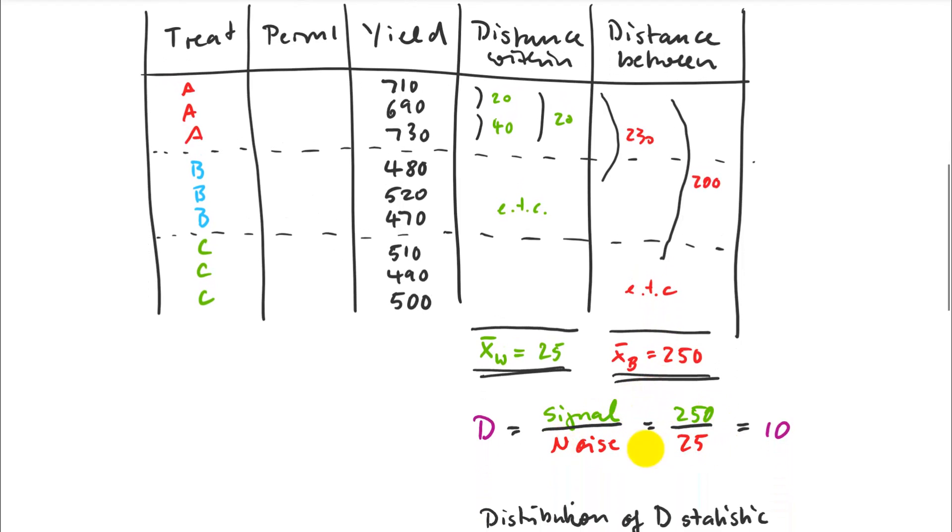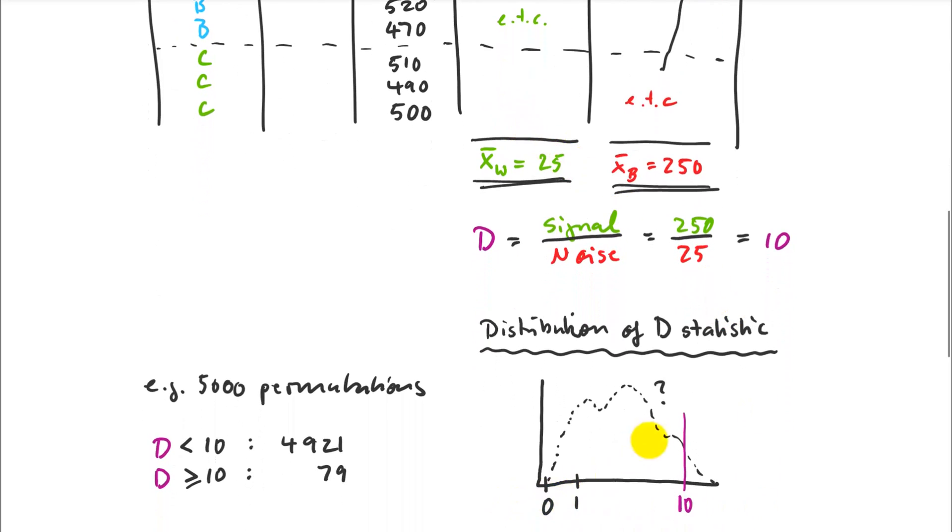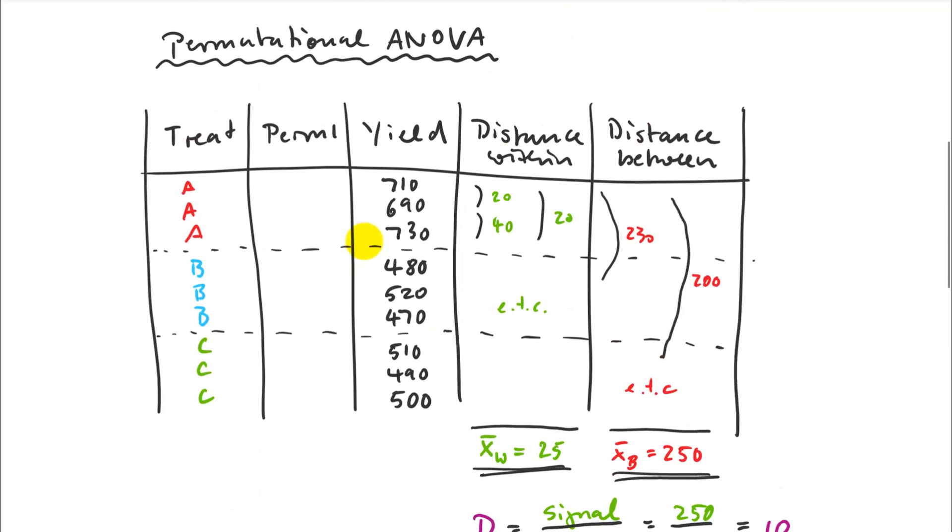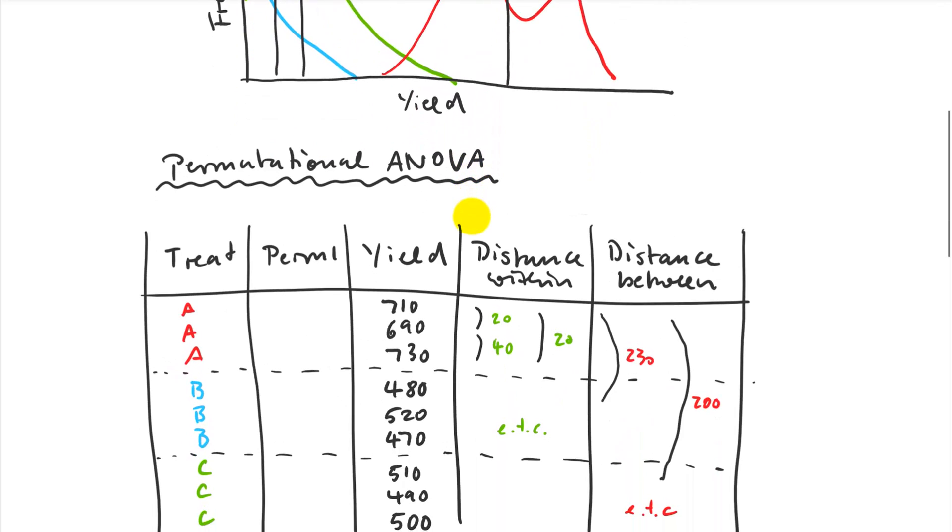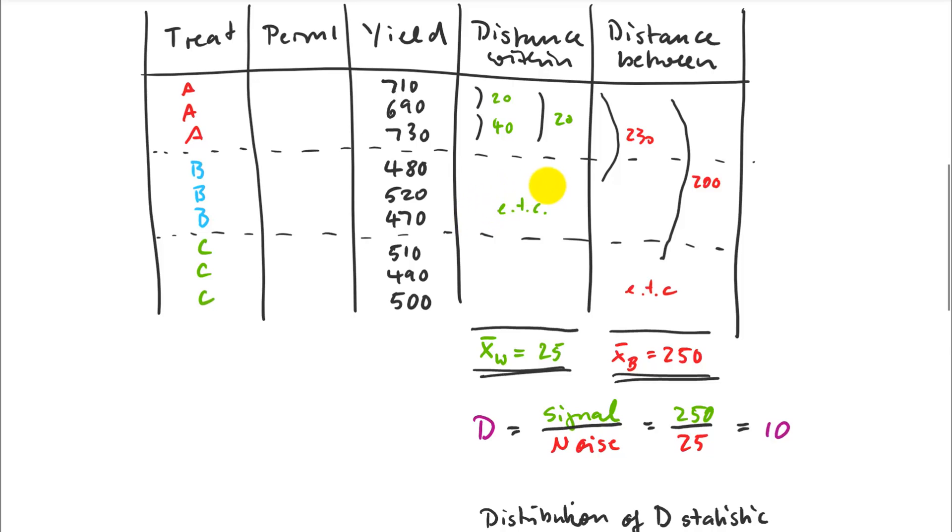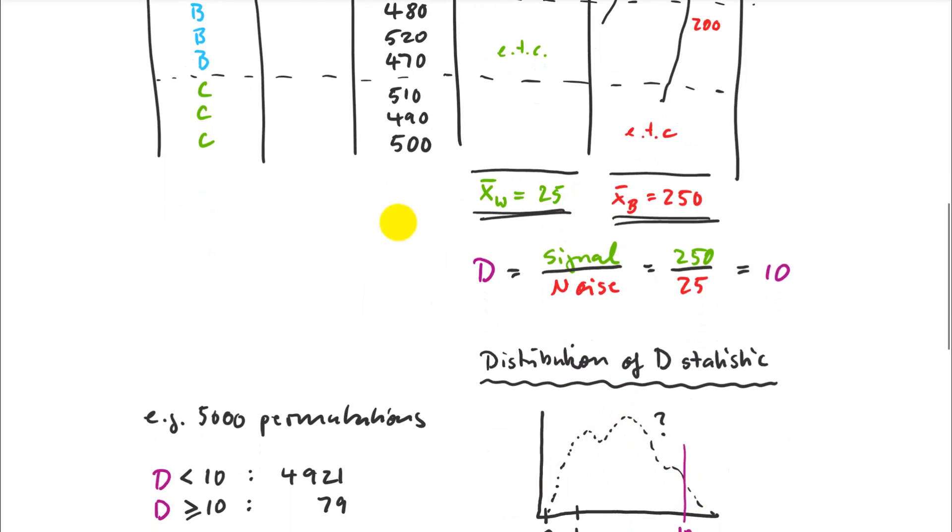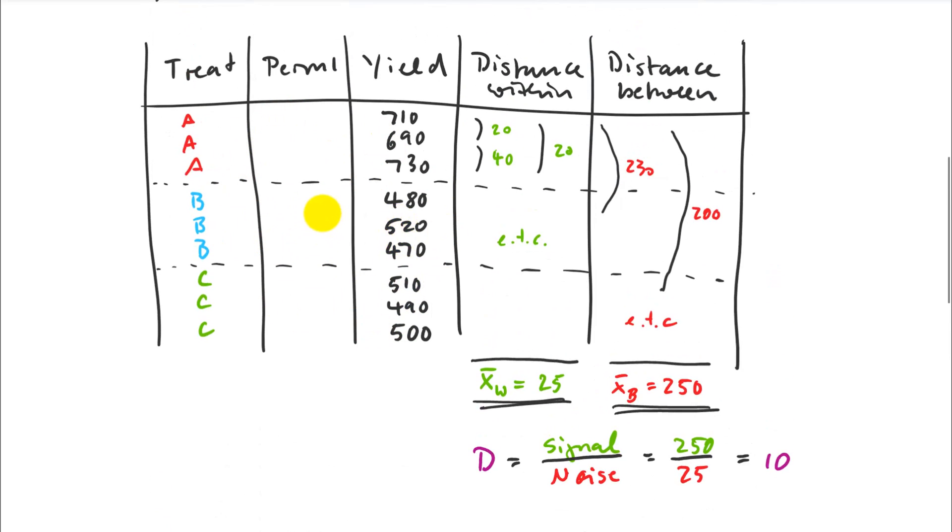Now I can calculate a signal-to-noise ratio that would actually be almost equivalent to an F value. Just because we use the distances here, I call this a D statistic. But it's the same idea. So it's 250 to 25. That's my signal-to-noise ratio of 10. And now, I just need to know the distribution of my D statistic. So if I have a signal-to-noise ratio of 10, that looks promising. So 10 times more signal than noise. And if this was an F distribution, it would have the shape of an F distribution. But because our data is a little screwed up here, we don't actually know how that distribution of those ratios would look like. So that's a problem. We don't know what that is. And that's where the computer can help us to generate this empirically with permutations.